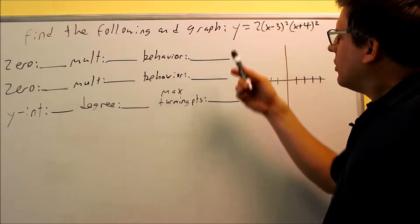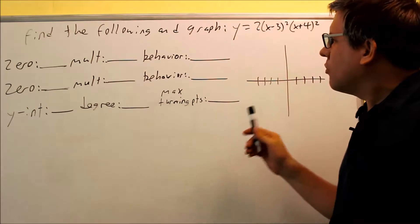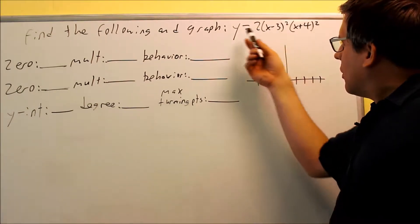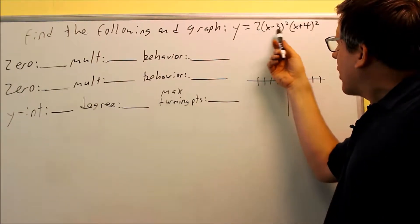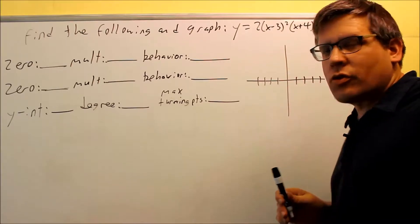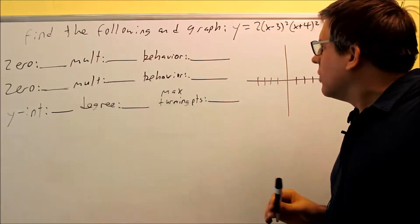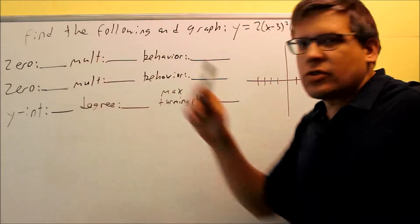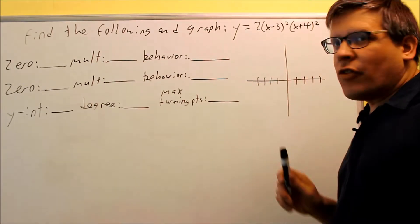We have another one that we want to find the information here and we also want to graph. So y equals 2(x-3)²(x+4)². We want to fill in this information. There's only two blanks for zeros because in this case there's only two factors.